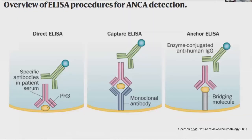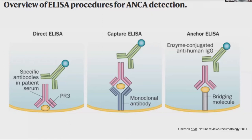The two most commonly employed methods for testing ANCA antigens are ELISA and Bioplex. ELISA has evolved from direct ELISA, where antigen is attached to plastic and you add patient serum and a secondary antibody — but this loses some epitopes and is less sensitive — to capture ELISA and anchor ELISA, where a bridging molecule makes more epitopes available for antibody binding. Anchor ELISA is more sensitive than direct ELISA.